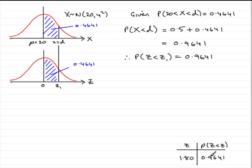Okay? So that means that therefore we can say that from tables, z1 equals 1.80. So what does that mean?